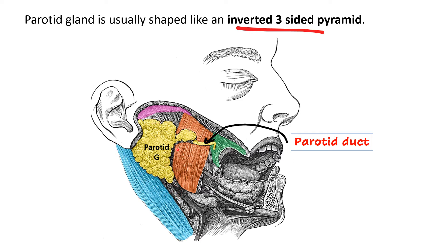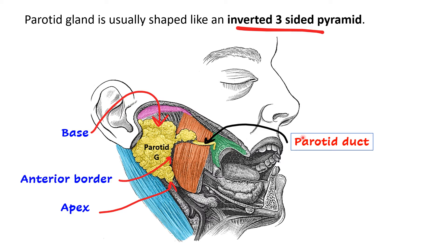This is the periphery of the parotid gland as seen from the lateral aspect. Looking superiorly, we have the base — so we will look at the structures emerging from the base. Then below we have the apex, and the structures emerging from the apex. We will also look at structures emerging along the anterior border and the posterior border of the parotid gland.